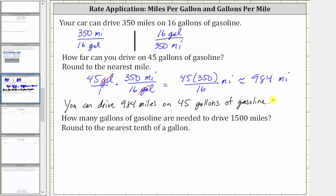And now for the second question: how many gallons of gasoline are needed to drive 1,500 miles? Let's first write 1,500 miles as a fraction with the denominator of one. And now to determine how many gallons of gas are required, we will multiply by the rate expressed in the form of gallons per miles, which in this case is 16 gallons per 350 miles. Notice by multiplying by this rate, we have the units of miles divided by miles, and therefore the units of miles simplify out, leaving us with gallons.